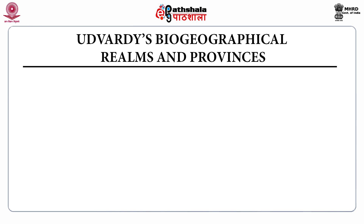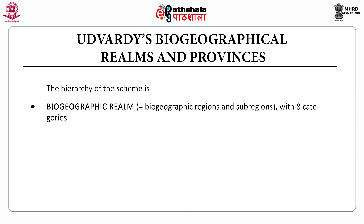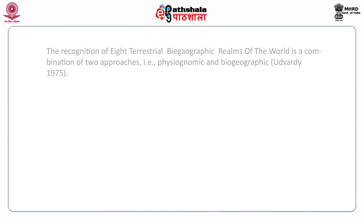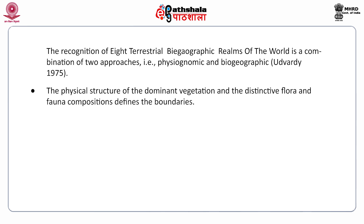Udwardi's biogeographical realms and provinces: The hierarchy of the scheme includes biogeographical realms, biogeographical regions and subregions with 8 categories, and biogeographical provinces with 193 categories, each characterized by a major biome or biome complex. There are 14 total biomes. The recognition of 8 terrestrial biogeographical regions of the world is a combination of two approaches — physiognomic and biogeographic — according to Udwardi in 1975. The physical structure of the dominant vegetation and distinctive floral composition defines the boundaries. Ecoregions are classified within a system comprised of biogeographical regions of the world.